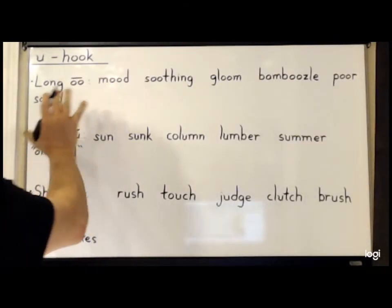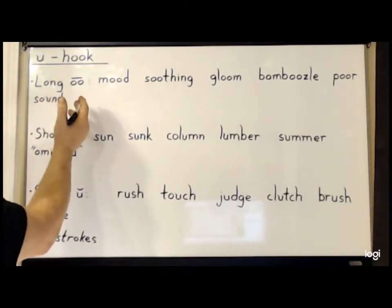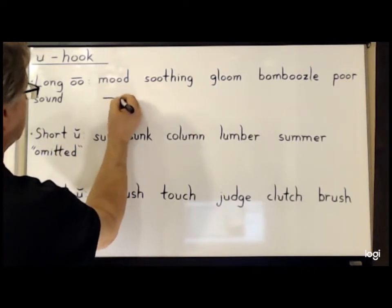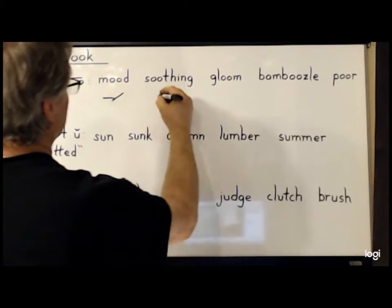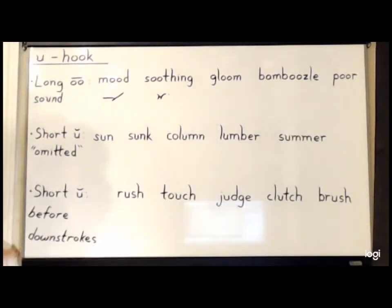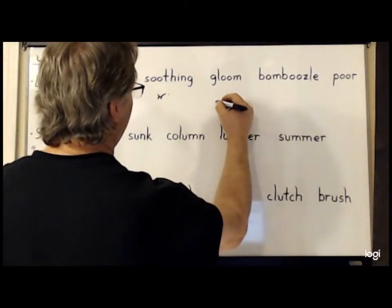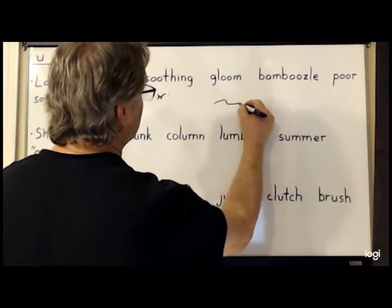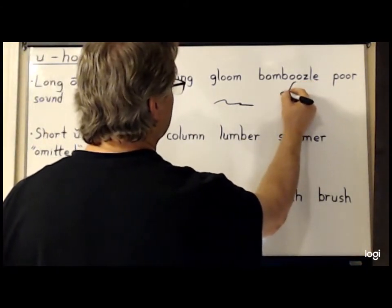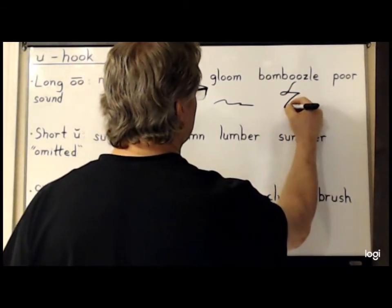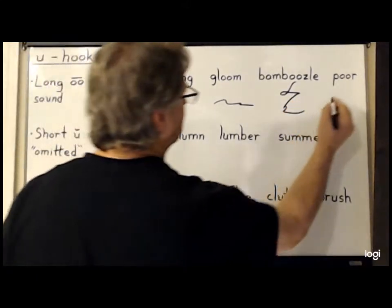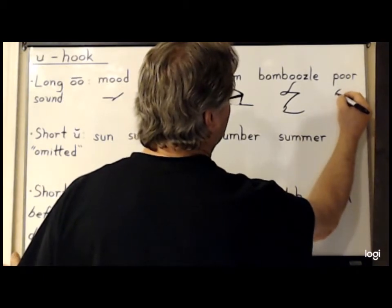The U hook can also represent the long double-O sound. Words like 'mood' will simply be M-U-D. For 'soothing', it will be S-U-T-H and a dot for the I-N-G. For 'gloom', it will be G-L-U-M. For 'bamboozle', B-A-M, the U hook, S, and then L. And for the word 'poor', it will be P-U-R.